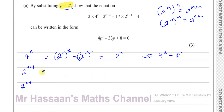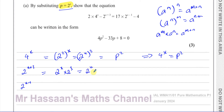For 2 to the power of x plus 3, we use the law of indices that when you multiply numbers in index form you add the powers. Working backwards, this can be written as 2 to the power of x times 2 to the power of 3. Since 2 to the power of 3 is 8, this becomes 8 times 2 to the power of x, which is 8p. So 2 to the power of x plus 3 equals 8p.